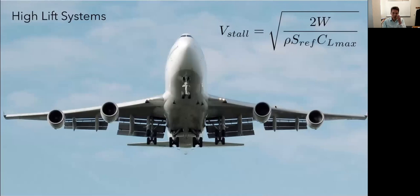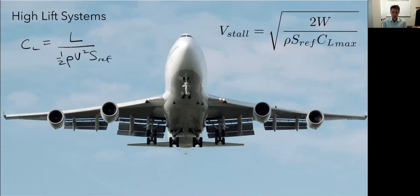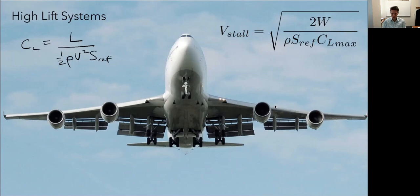For takeoff and landing in large aircraft, we use what are called high lift systems. The lift coefficient equation - L = q * S * CL, where q = one-half rho v-squared - can be rearranged to solve for velocity. Assuming vertical equilibrium where lift equals weight, and looking for the minimum speed, that minimum occurs when CL is at its maximum value since CL is in the denominator. This gives us the definition of 1g stall speed.